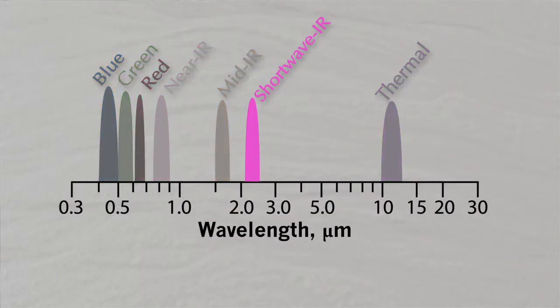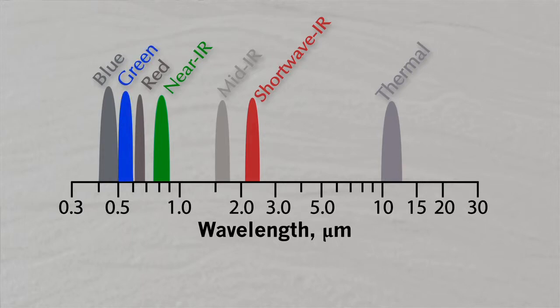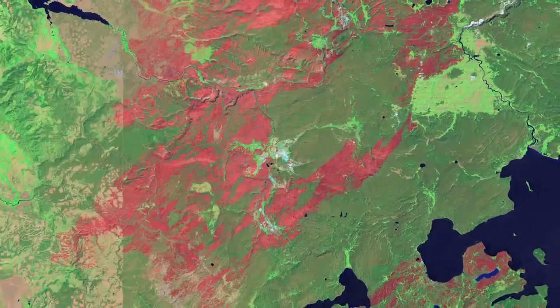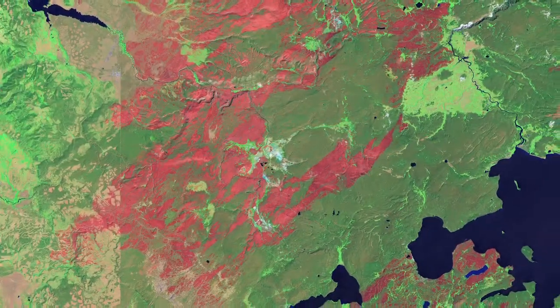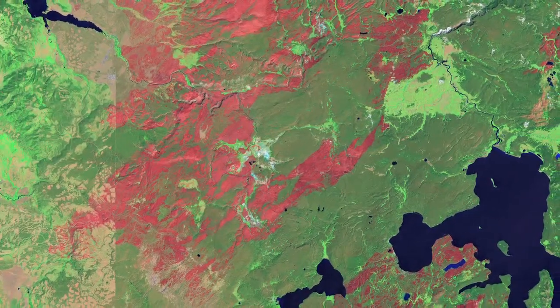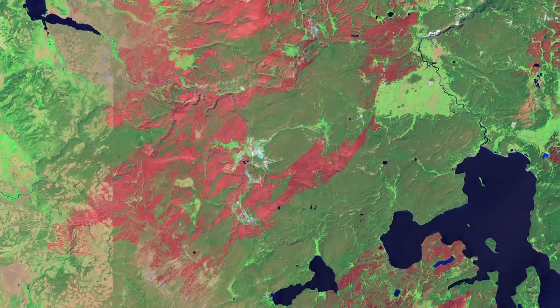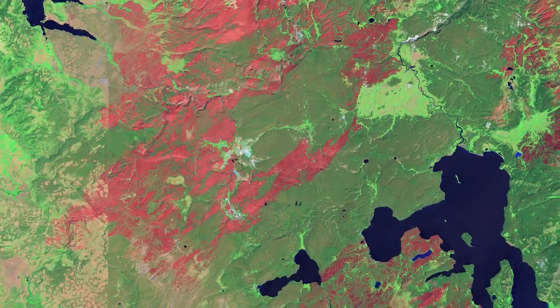So in this case, for example, we've assigned the short-wave infrared band to the red, we've assigned the near-infrared band to the green, and we've assigned the green band to the blue. And that creates what we call a false color image. It's not exactly what your eye would see, but in this case it's quite convenient because the healthy vegetation shows up as green, and so we can sort of automatically interpret that.